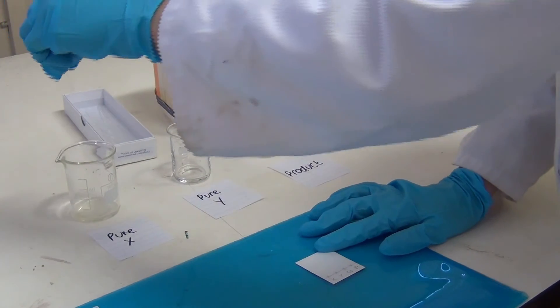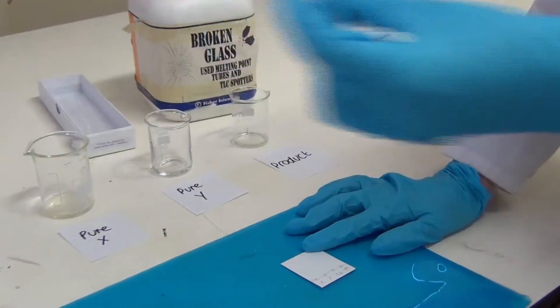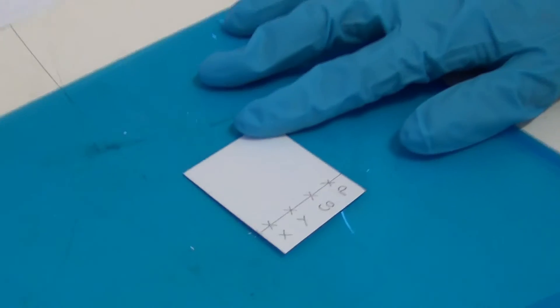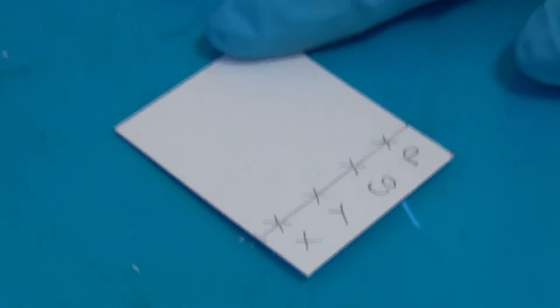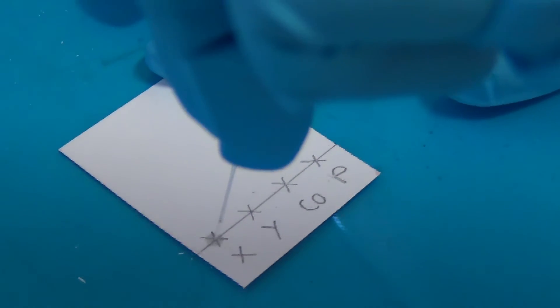Then use a capillary tube to spot a sample of compound X onto the mark labelled X on the TLC plate. Make sure there is enough sample spotted on the TLC plate, so make sure to spot two to three times. Also spot on the mark labelled Co.